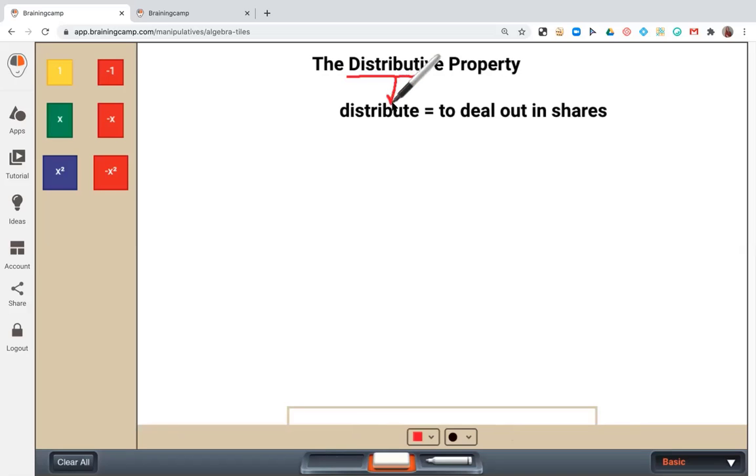So I often think about the distributive property or I think about the word distribute when I think about distributors. So for example, companies who deliver packages or distribute packages to their clients or to the consumer.